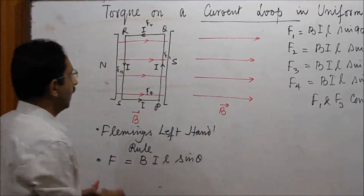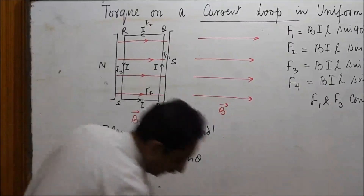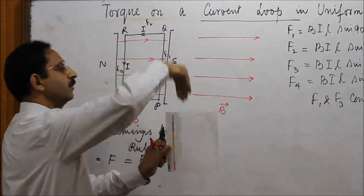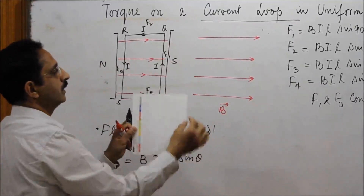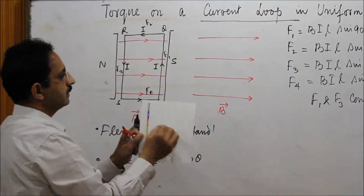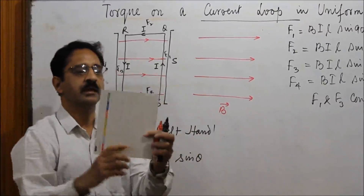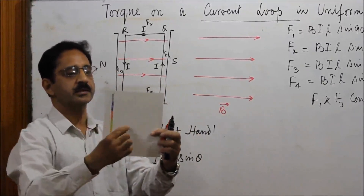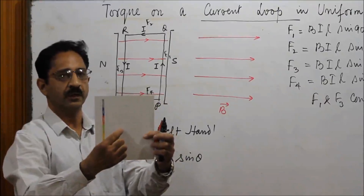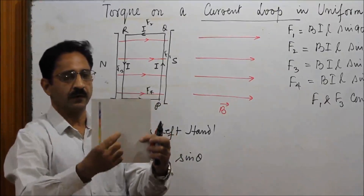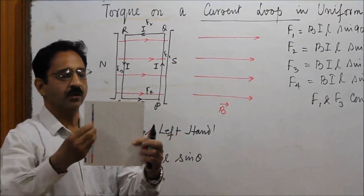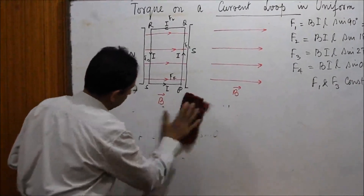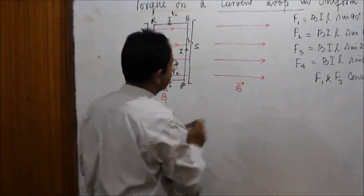There is a current loop in the magnetic field seen from the top view. The loop encloses a certain area, and there is a quantity called the area vector — a vector perpendicular (normal) to the plane of the current loop, with magnitude proportional to the enclosed area. We will be using the idea of the area vector shortly.